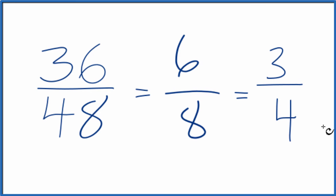So the simplified fraction for 36 over 48 is just 3 fourths. We probably could have found another factor - I think 12 goes into 36 three times and into 48 four times. But this works as well.